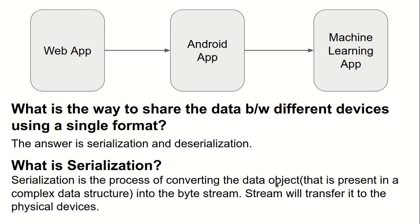Serialization is the process of converting a data object that is present in a complex data structure into a byte stream. The byte stream then transfers the data to physical devices, sending the data one by one in the form of chunks or data packets.